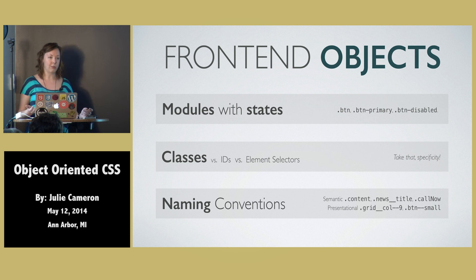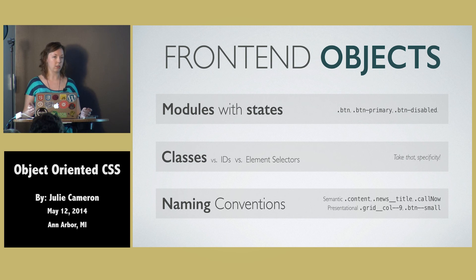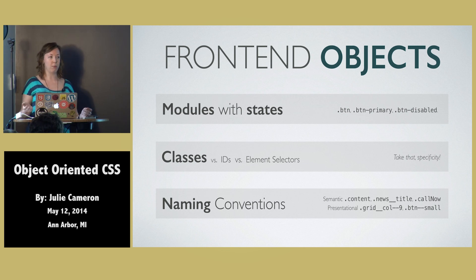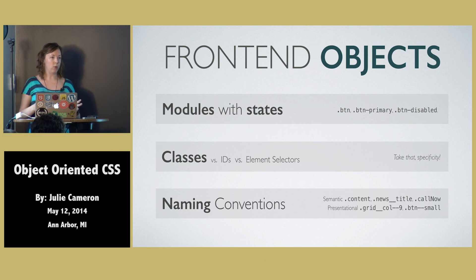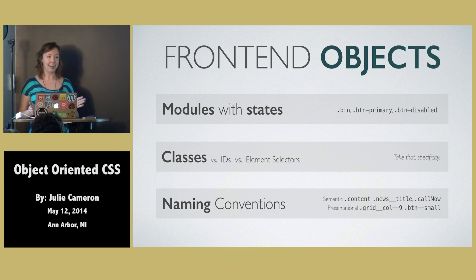One of the keys to composing these objects on the front-end is the use of classes. We heavily rely on classes over any other selectors because they give us the flexibility with specificity that we need. This ties directly into naming conventions. There are a lot of different modular systems for the front-end, and a lot of them have their own preferable naming convention. There are sort of two sides to this argument — it's highly debated, so definitely look that up.